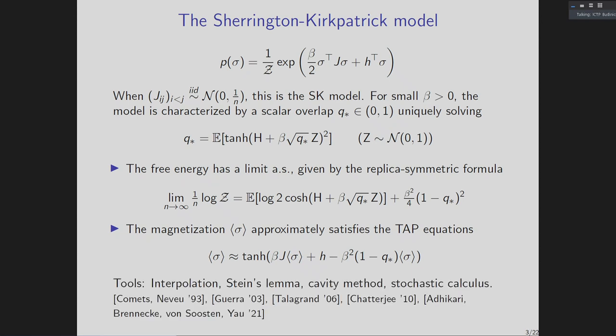The mathematical tools used to prove these results include an interpolation argument combined with Stein's Gaussian integration by parts lemma, introduced by Guerra and further developed by Talagrand. To prove the TAP equations, you can use this in a cavity method context, also made rigorous by Talagrand. There are also techniques based on studying a dynamical evolution of the Hamiltonian via Brownian motion and stochastic calculus. What I want to emphasize is that a lot of these techniques rely quite strongly on the assumption that entries of the couplings matrix are independent — they use this independence in a crucial way.